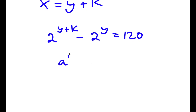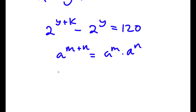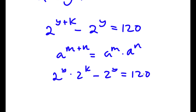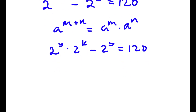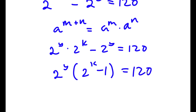If I have something in the form a to the power of m plus n, this is equal to a to the power of m times a to the power of n. So 2 to the power of y plus k equals 2 to the power of y times 2 to the power of k, minus 2 to the power of y, equals 120. Now if I factor out 2 to the power of y, I get 2 to the power of y times the quantity 2 to the power of k minus 1, is equal to 120.